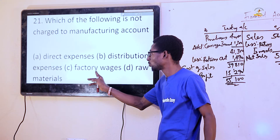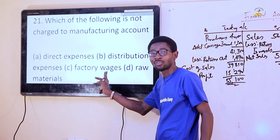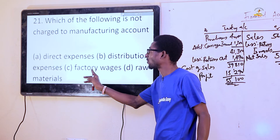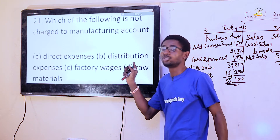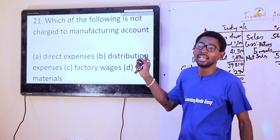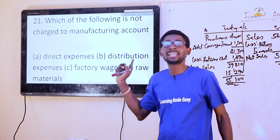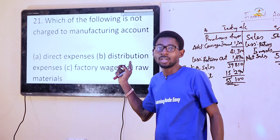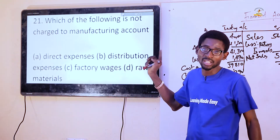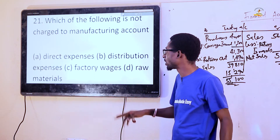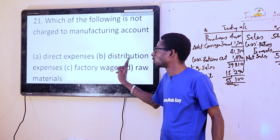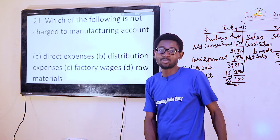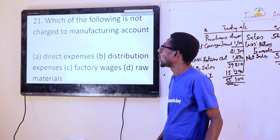Option C is used to get factory overheads, which is under professional accounts. Option D is used in the P&L accounts — it is used in a profitable account under expenses. So the answer is option B, distribution expenses.